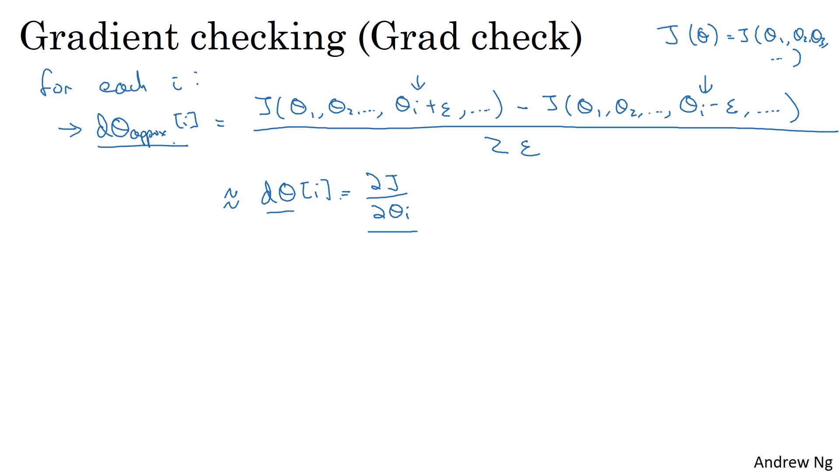So what you're going to do is you're going to compute this for every value of i. And at the end, you now end up with two vectors. You end up with D theta approx, and this is going to be the same dimension as D theta. And both of these are in turn the same dimension as theta.